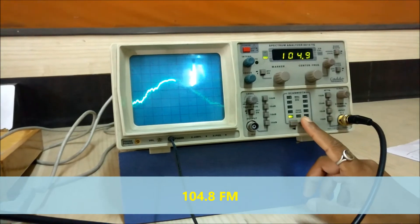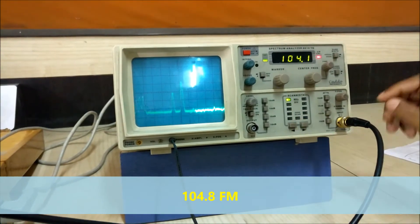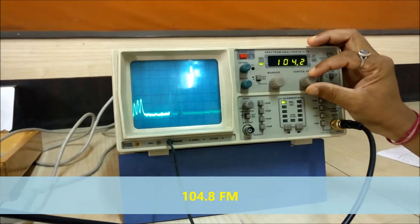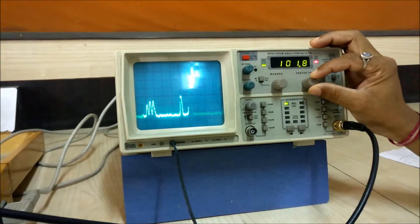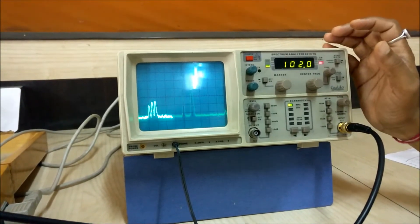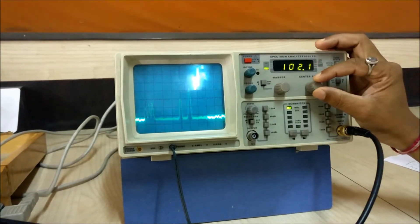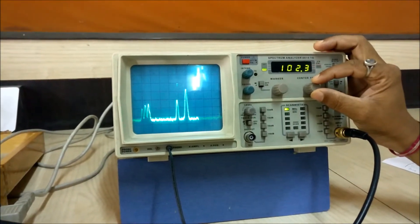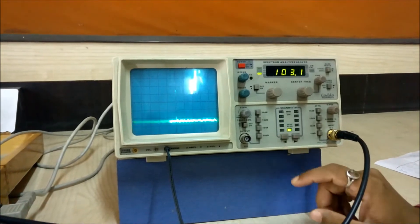Similarly we can see all the signals present, like 104.8 FM. Similarly if we change it, this is another one, 102.4 FM. So to listen it we have to set to 102.1.